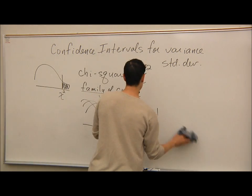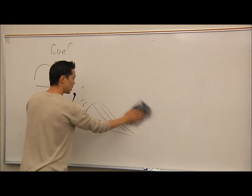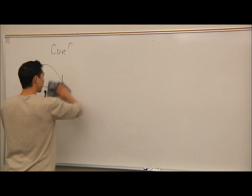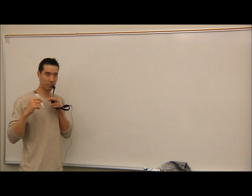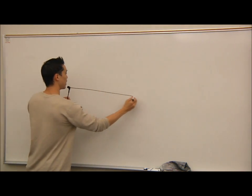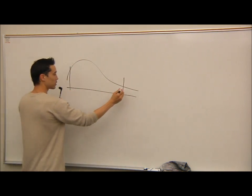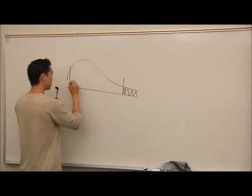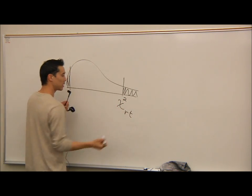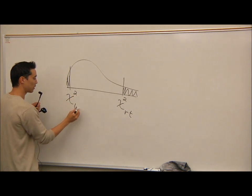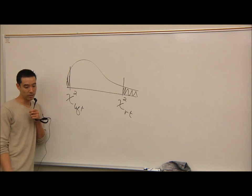Before we jump into the formula, let's examine how you find chi-square values. With each confidence interval, you're going to find a chi-square right value and a chi-square left value. So we draw a picture: some area on the right tail, some area on the left tail — we call this chi-square right and chi-square left. Those are the values you'll have to find using your chart.